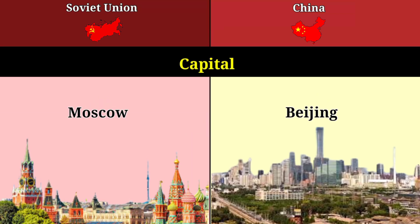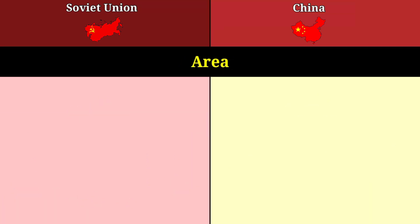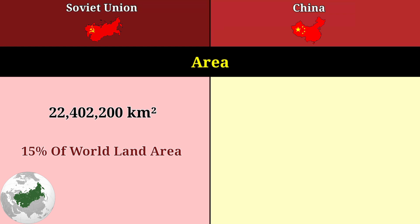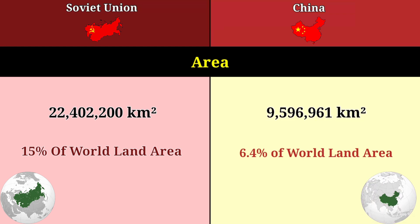Capital: Moscow for the Soviet Union, Beijing for China. Area: 22.4 million square kilometers for the Soviet Union, 9.5 million square kilometers for China.